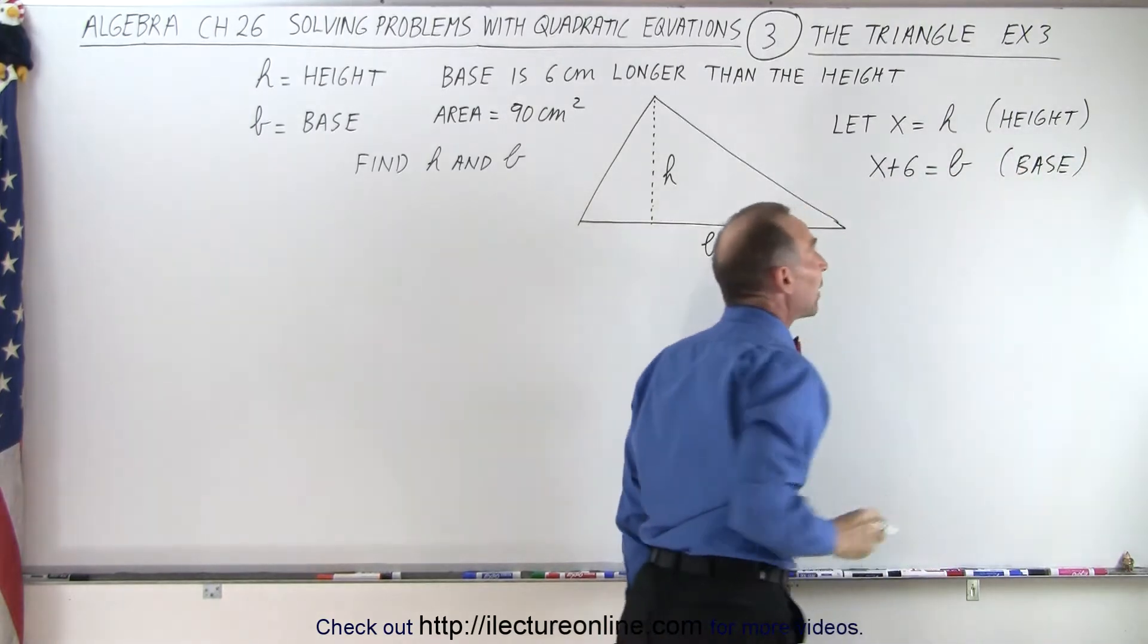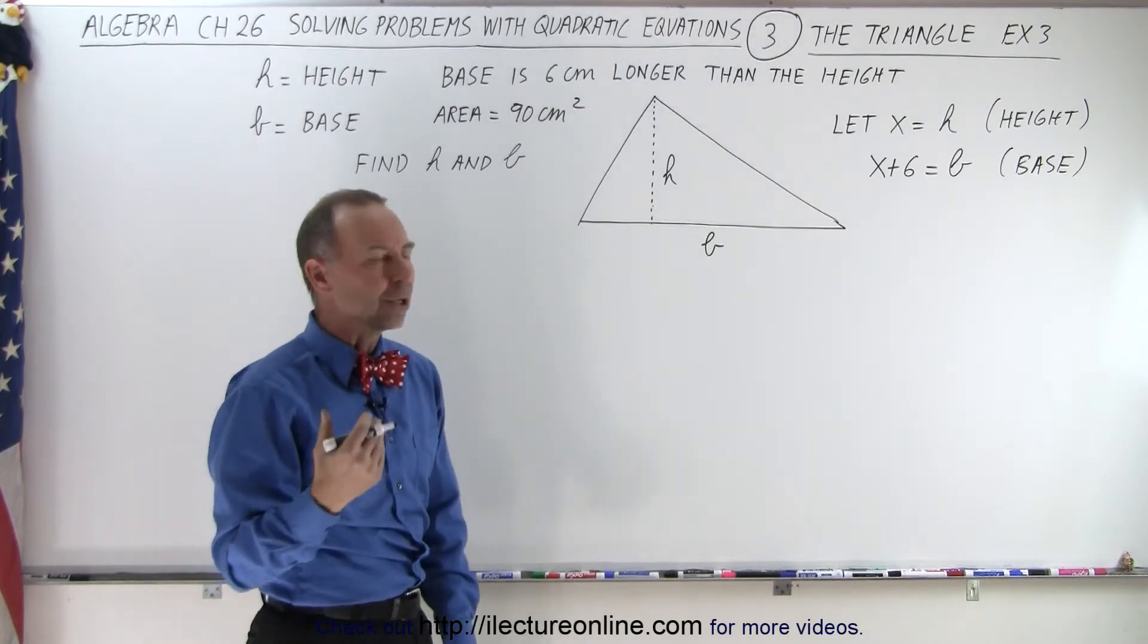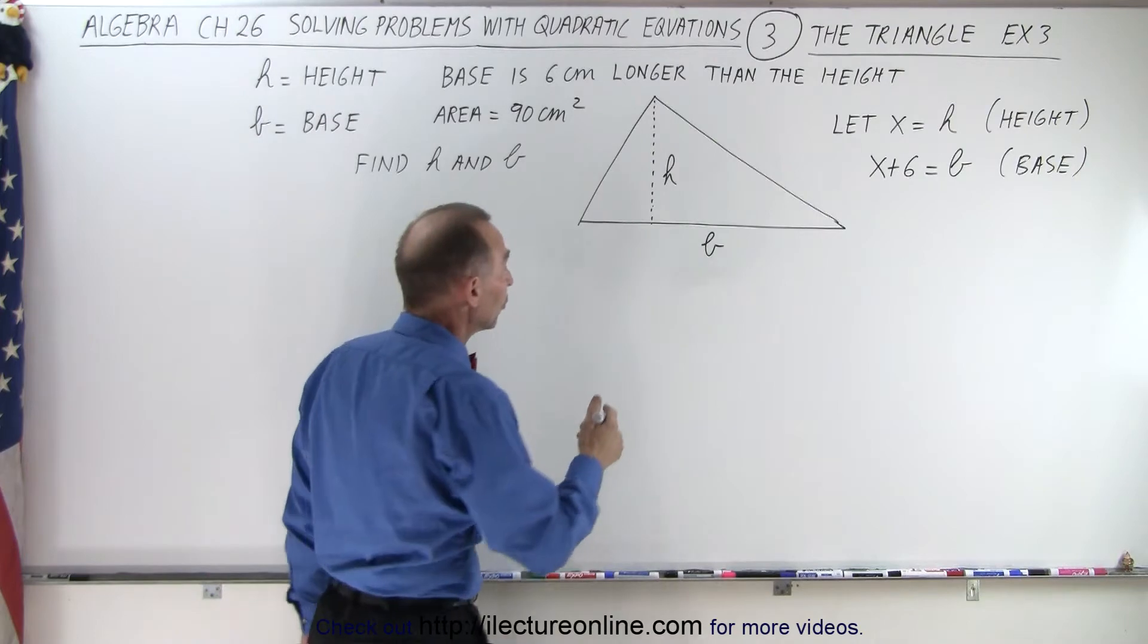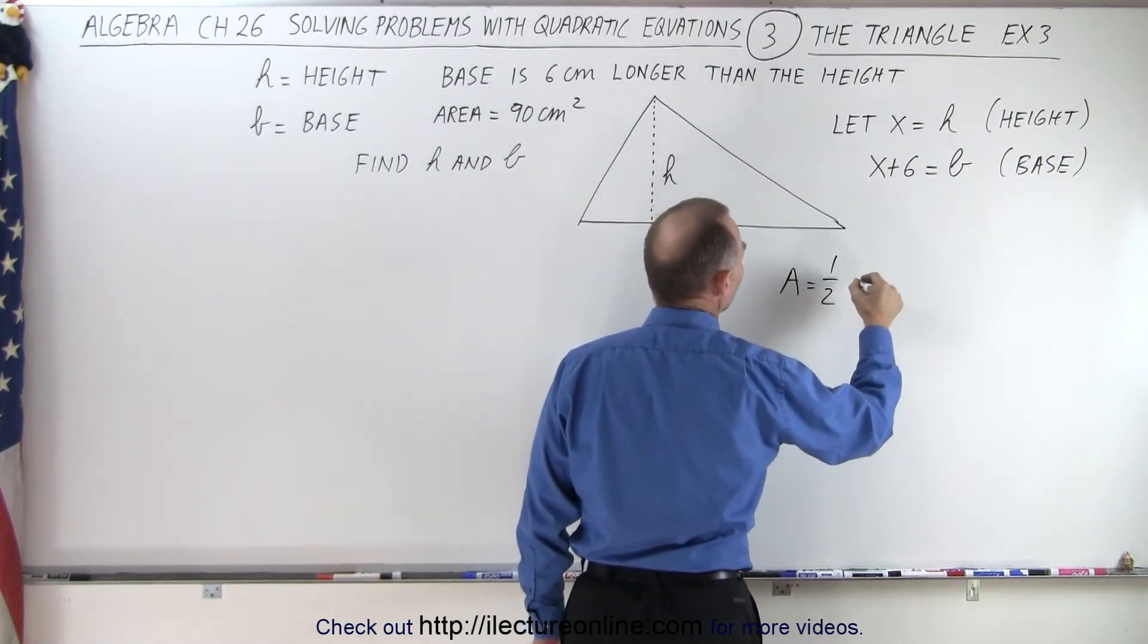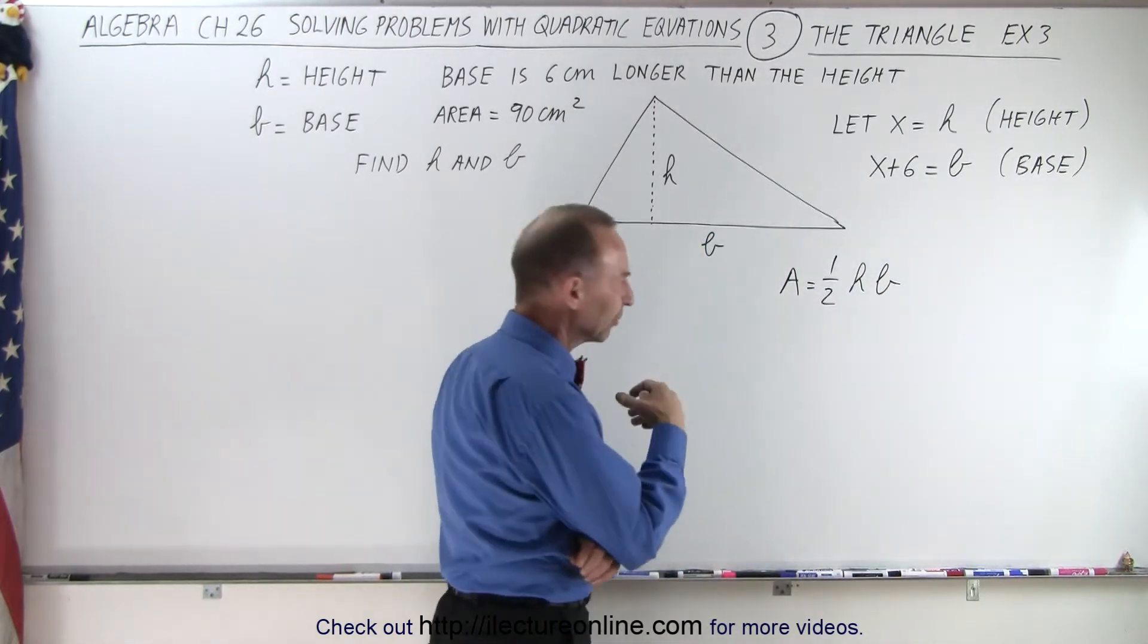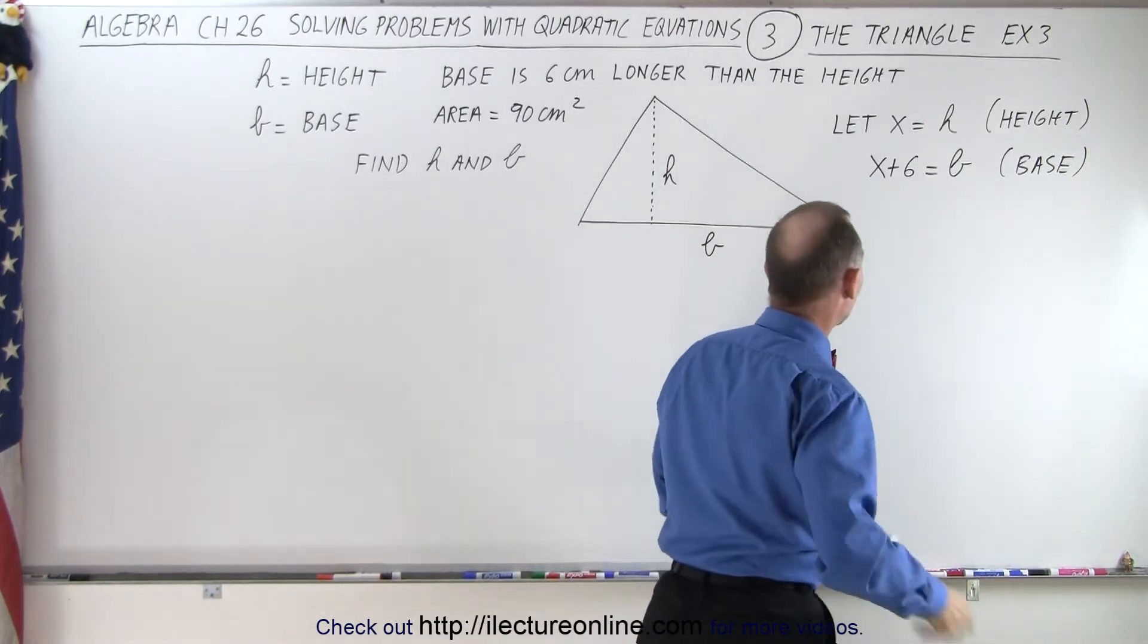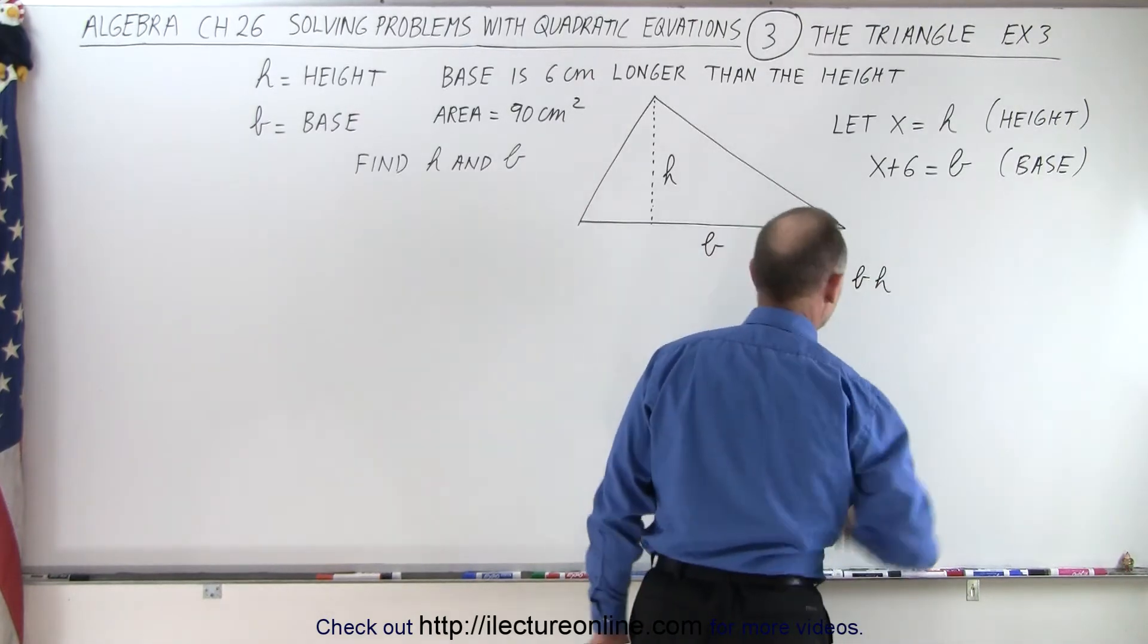Now we have both the height and the base in terms of the unknown variable x. We need an equation to relate the height to the base, and we're given the area. The area of a triangle is equal to one-half the height times the base, or the base times the height. Let's do it the right way: one-half the base times the height.